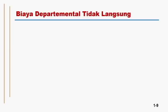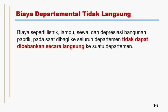Selain departmental cost langsung, ada biaya departemental tidak langsung. Biaya seperti listrik, lampu, biaya sewa, dan depresiasi bangunan pabrik, pada saat dibagi ke seluruh departemen, tidak dapat dibebankan secara langsung ke suatu departemen. Perbedaannya dengan supervisi: biaya supervisi kita bisa lihat orangnya secara langsung dan bebankan sebagai biaya departemental langsung, sedangkan listrik sulit dipastikan penggunaannya per departemen karena satu gardu listrik menyuplai seluruh perusahaan.